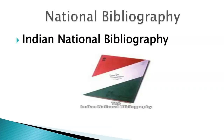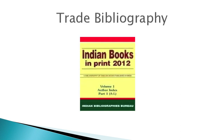Now we come to National Bibliography. A national bibliography lists the publications produced in a country. For example, in India we have the Indian National Bibliography. Trade bibliographies are brought out by publishers, booksellers, distributors or printers. These bibliographies list books which are available for sale. Trade bibliographies are used by libraries to select books. An example of a trade bibliography is Indian Books in Print.